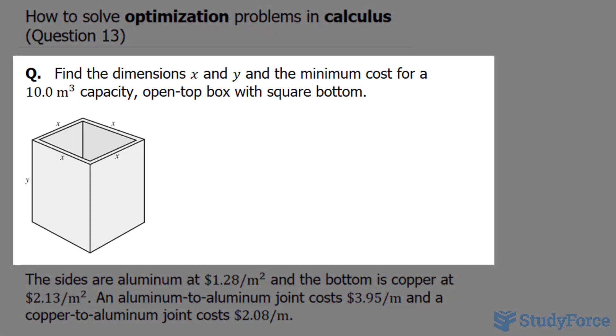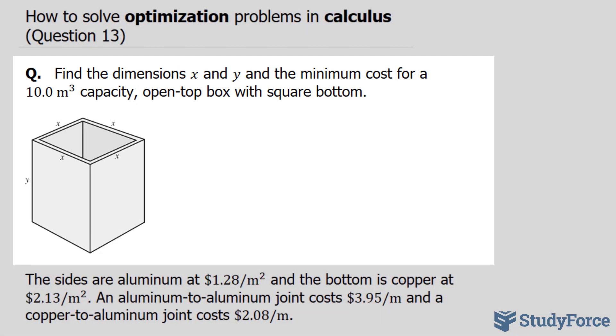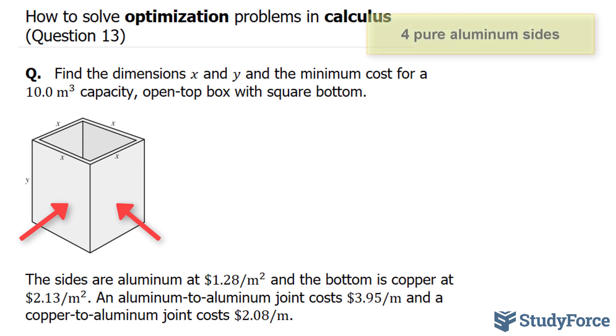The question reads: find the dimensions x and y and the minimum cost for a 10 meter cubed capacity open top box with a square bottom. The sides are aluminum at $1.28 per meter squared, and the bottom is copper at $2.13 per meter squared. An aluminum to aluminum joint costs $3.95 per meter, and a copper to aluminum joint costs $2.08 per meter.